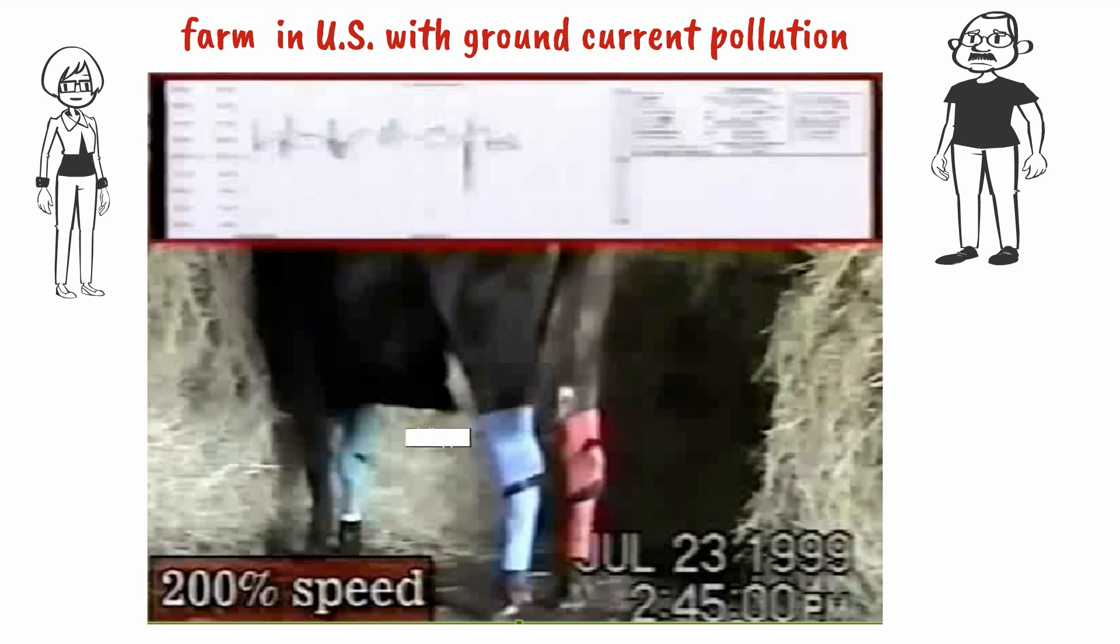This cow has electrodes attached to her front and hind legs. The sharp lines in the top graph are the high-frequency voltages flowing across the cow's body. These high frequencies are often accompanied by foot lifting and twitching.